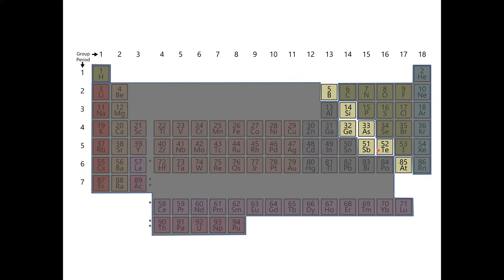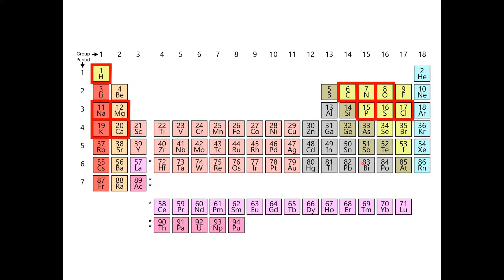The ones highlighted here in red are the bulk elements of life — this is what most of our bodies are made out of: our proteins, our bones, our brains, our blood. And then there's another group of trace elements needed by various forms of life, but in much smaller amounts. For example, an average healthy adult will have about a tenth of a gram of copper in their body. It's not very much, but if they don't have it, they will die because certain critical enzymes depend on copper to make them work.